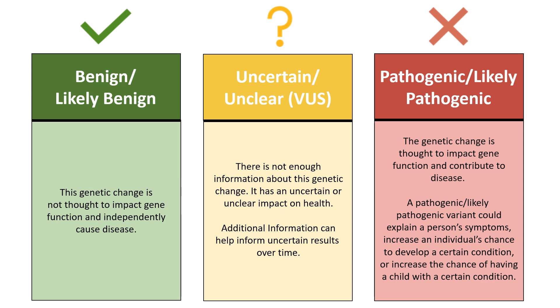Variants classified as variants of uncertain significance, or VUSs, do not yet have enough information available to determine whether they are disease-causing and pathogenic, or a part of the benign genetic variants that each of us have.